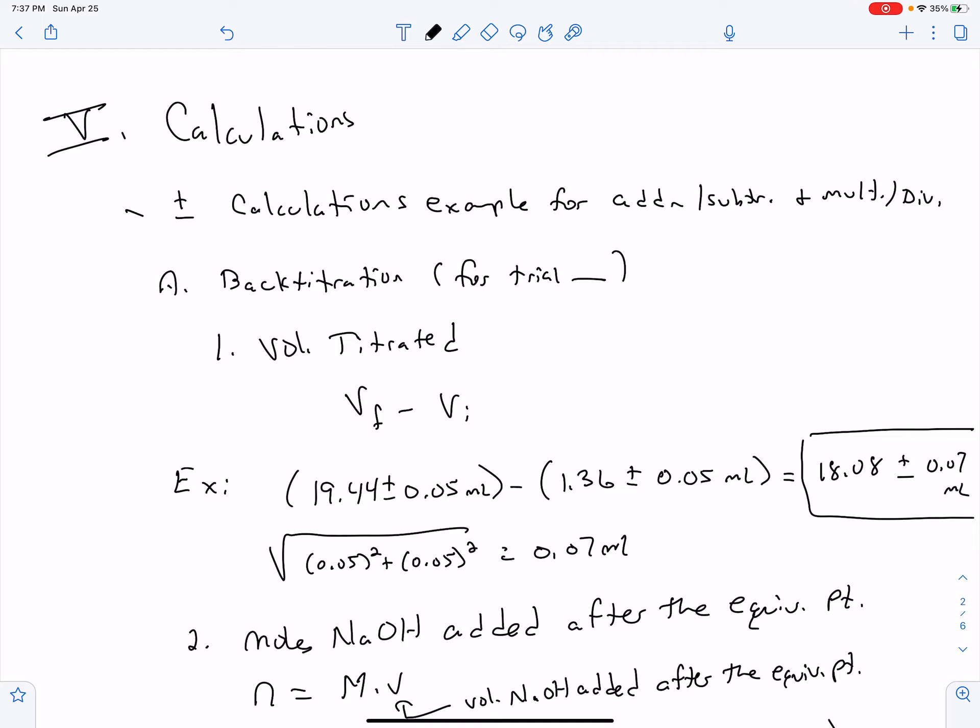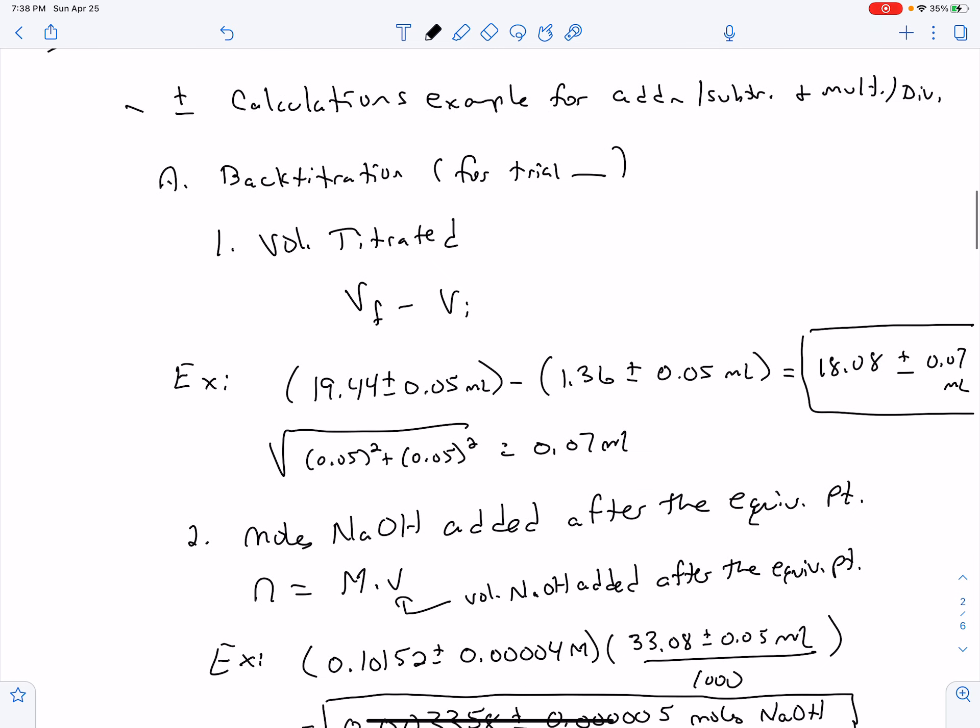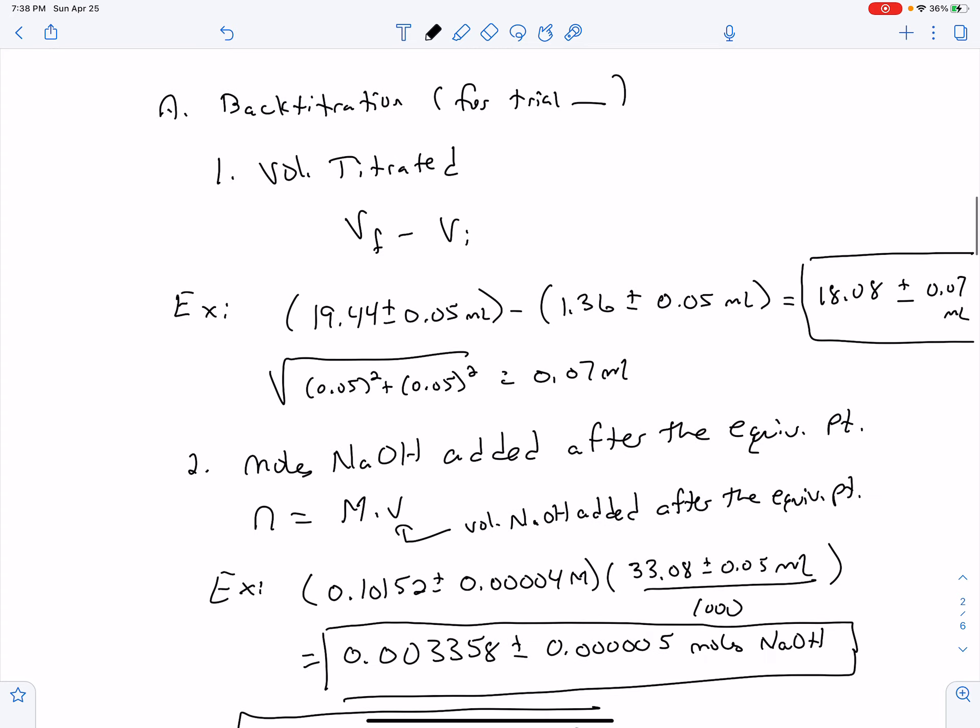Volume, the first one for the back titration for trial. Remember, I'm showing a specific trial. For this person, it's for trial one. You could show me whatever trial that is. Volume titrated was final minus initial. In this case, their final volume was 19.44, the burette is plus or minus 0.05 milliliters, minus the initial of 1.36 plus or minus 0.05 milliliters. When I subtracted two of those, I got 18.08. And then my plus or minus, this is an addition or subtraction, so two times 0.05 squared and the square root of that was 0.07. We'll all get that same value when we do our volume titrated.